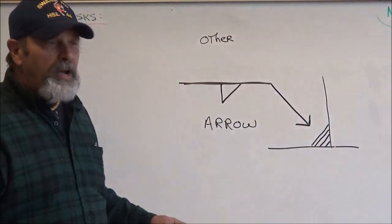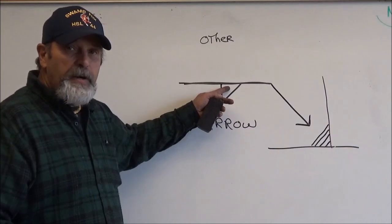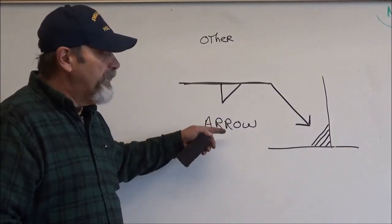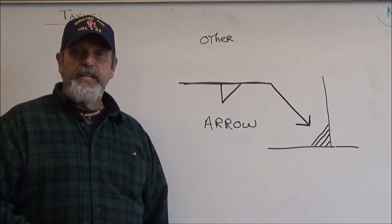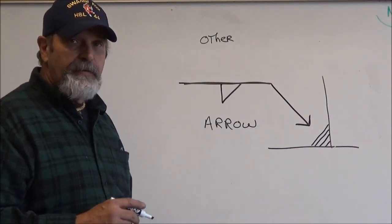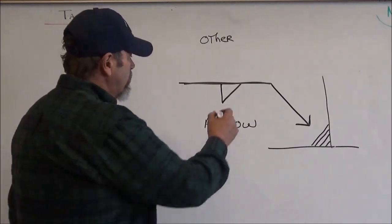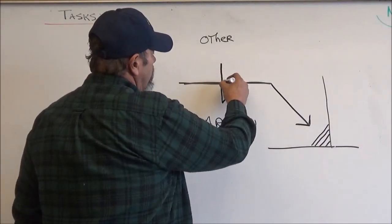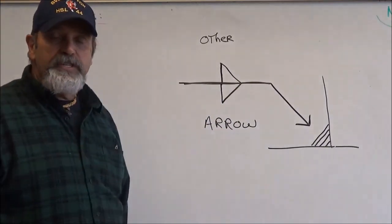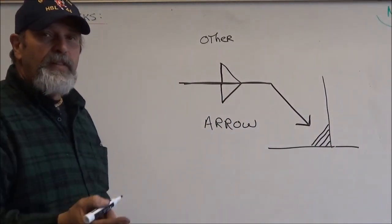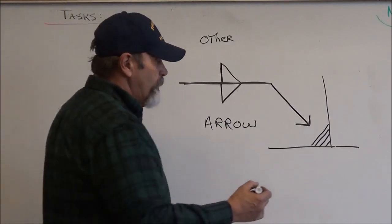So, if the weld symbol is on the bottom of the reference line or what we call the arrow side, the weld is going to go directly to where the arrow is pointing. Now then, let's say we want to weld on both sides. In that case, we put a weld symbol up there and now we know that the weld is going to go on both sides of the joint.